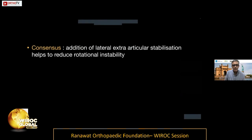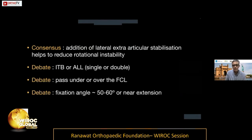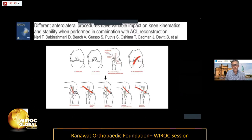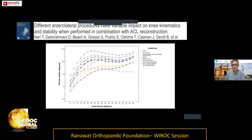The consensus is that we need to add something on the lateral side to reduce rotational instability, but the debate remains as to which procedure, what fixation angle, and how to use the fibular collateral ligament. A study from the ESSKA course comparing five lateral procedures — the ALL, modified Ellison, modified deep and superficial Lemaire, and modified Macintosh — found less over-constraint with the modified Ellison and the ALL, and higher constraint with the Macintosh and Lemaire.